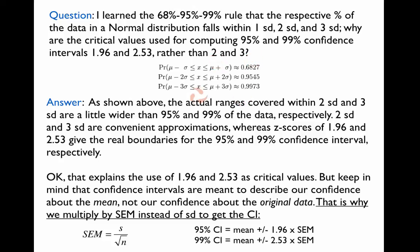The reason for that is that using the numbers 2 and 3 are estimated numbers that are convenient for computing approximately the 95th and 99th percent confidence intervals. The actual confidence intervals computed from these choices of 2 and 3 times the standard deviation are actually 0.9545, so the 95.45 percentile, and 99.73 percentile. So that explains the use of 1.96 and 2.53 as critical values.